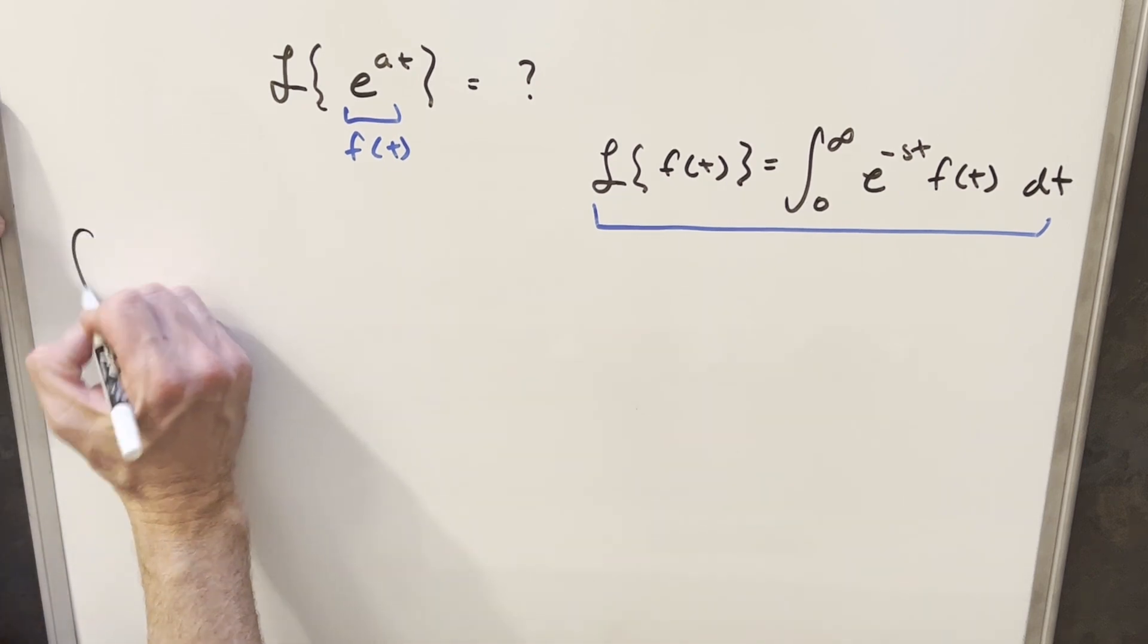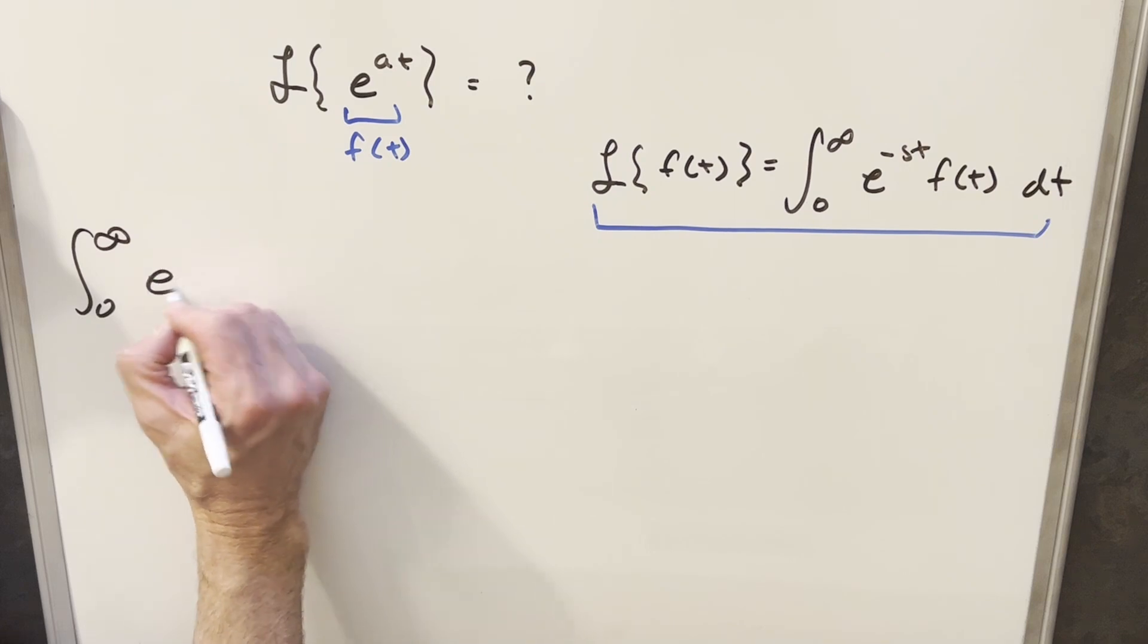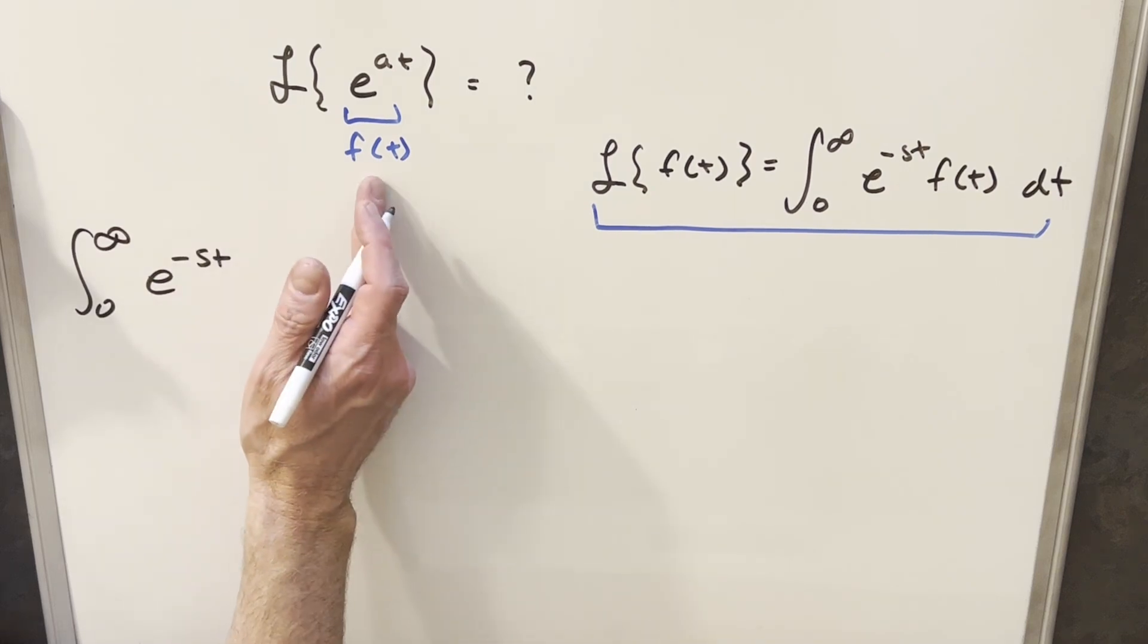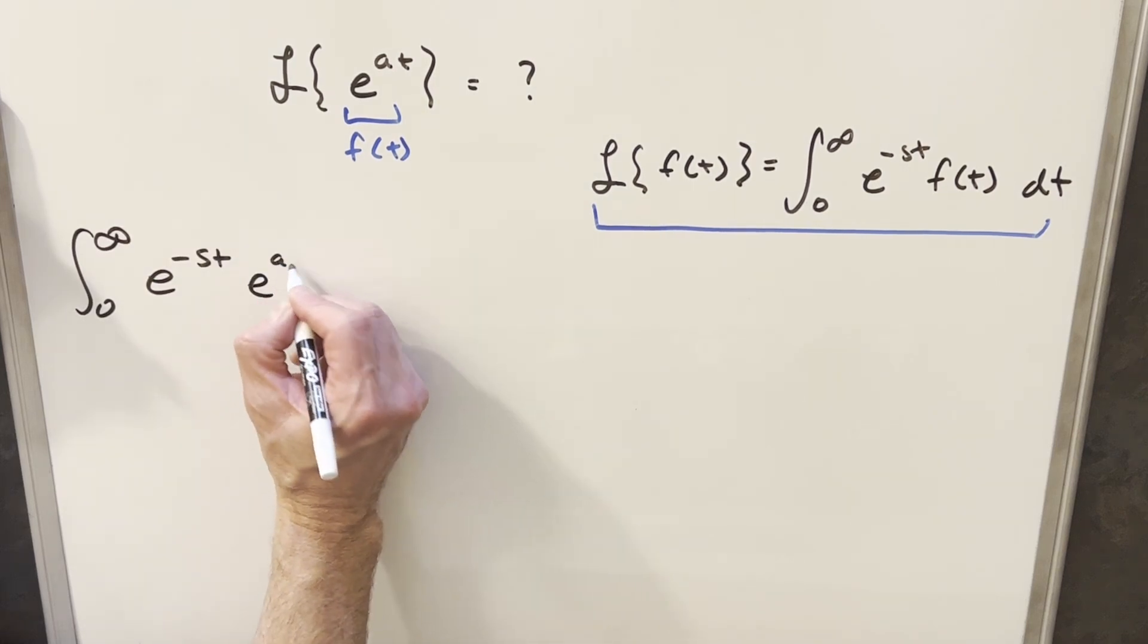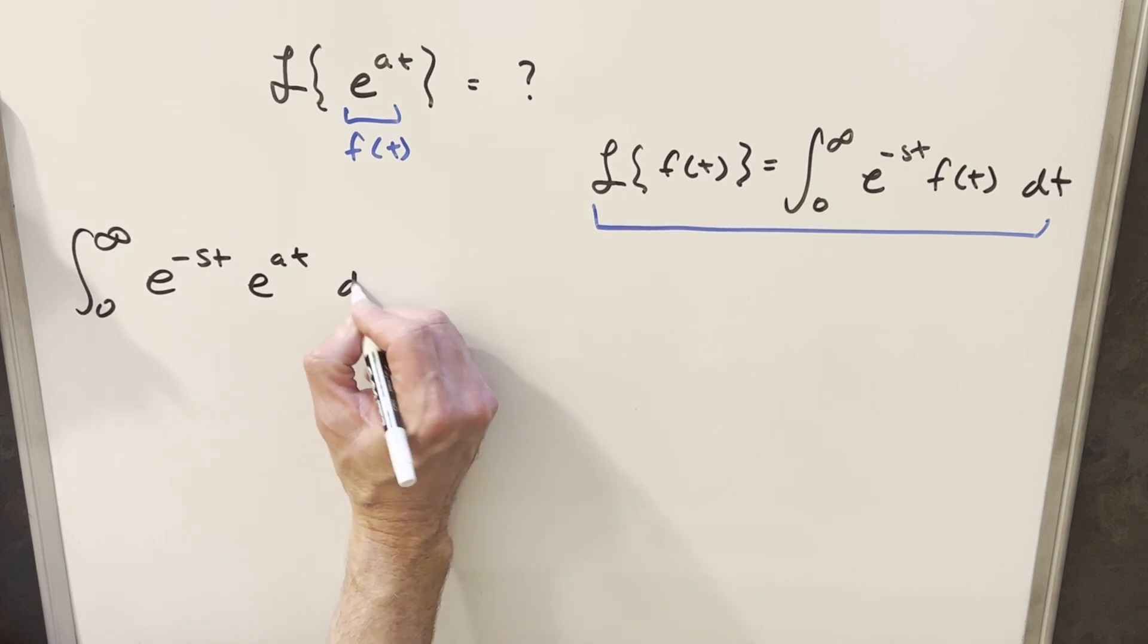So let's plug everything in. We'll use this formula, we're going from 0 to infinity. We have e to the minus st, and we'll plug in our f of t, which is e to the at dt.